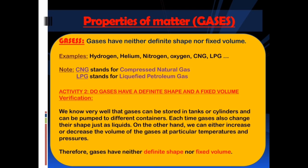So far we have discussed the properties of solids and liquids. Now we shall discuss the properties of matter — gases. Gases have neither definite shape nor fixed volume. Examples: hydrogen, helium, nitrogen, oxygen, CNG and LPG. Note: CNG stands for compressed natural gas; LPG stands for liquefied petroleum gas. Activity 2: do gases have a definite shape and a fixed volume? We know that gases can be stored in tanks or cylinders and can be pumped to different containers. Each time, gases also change their shape just as liquids. We can either increase or decrease the volume of gases at particular temperatures and pressures. Therefore, gases have neither definite shape nor fixed volume.